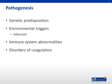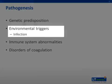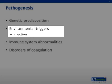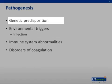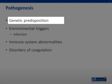The exact pathogenesis of HSP remains unknown, though an infectious trigger is suspected given the frequency of preceding upper respiratory infections, particularly with group A beta-hemolytic streptococcus. HSP occasionally clusters in families, suggesting a genetic component.